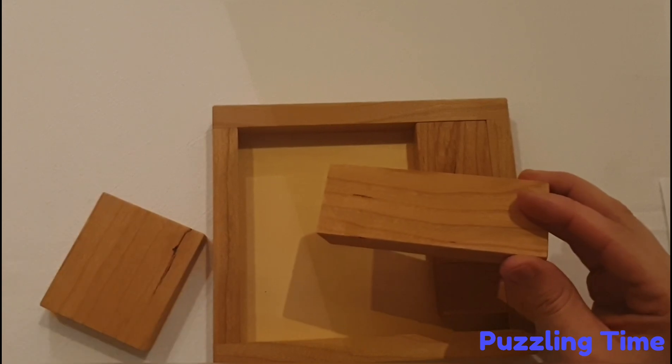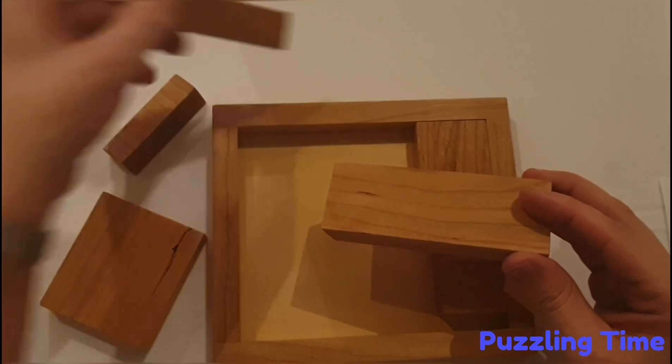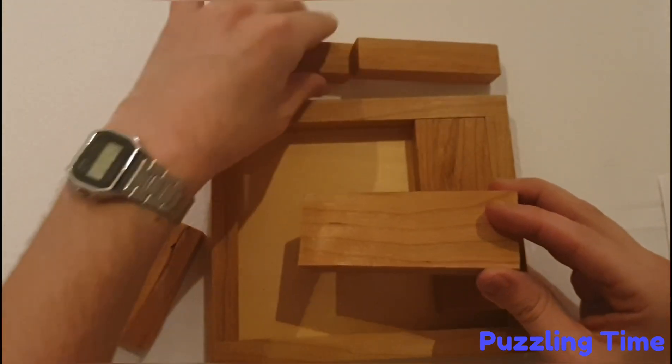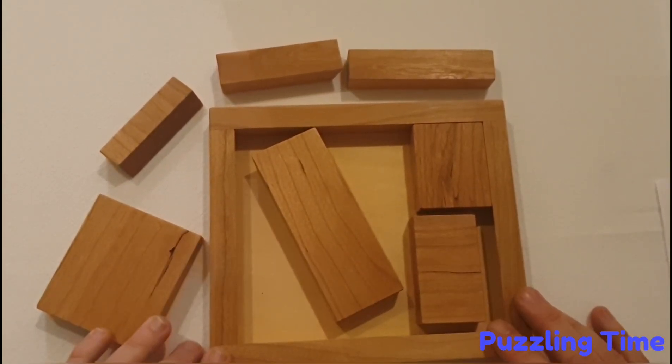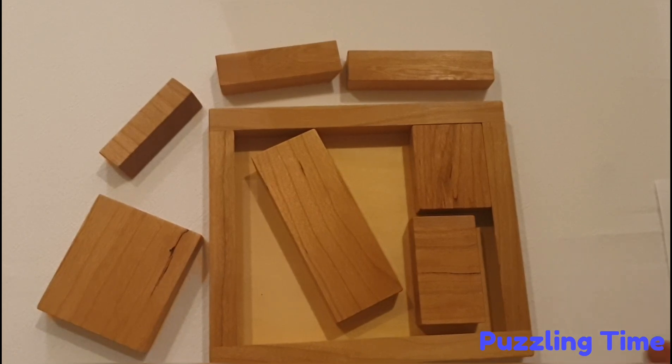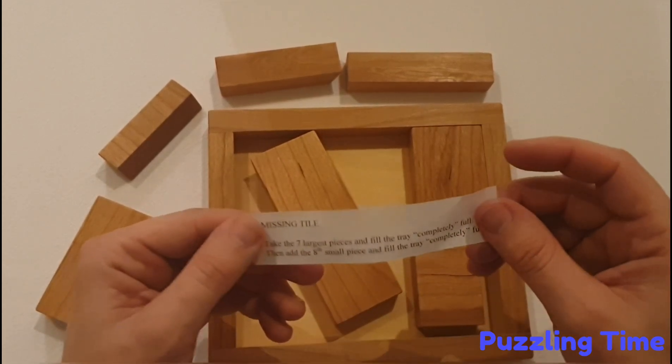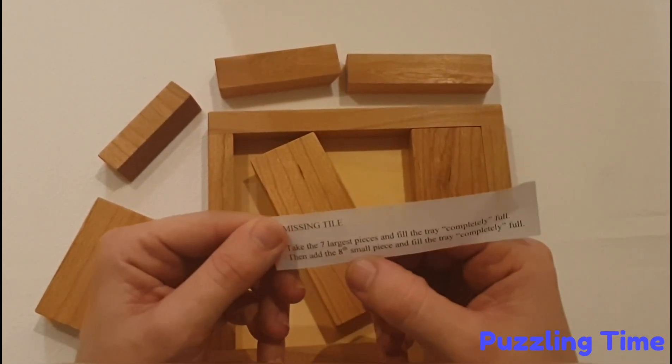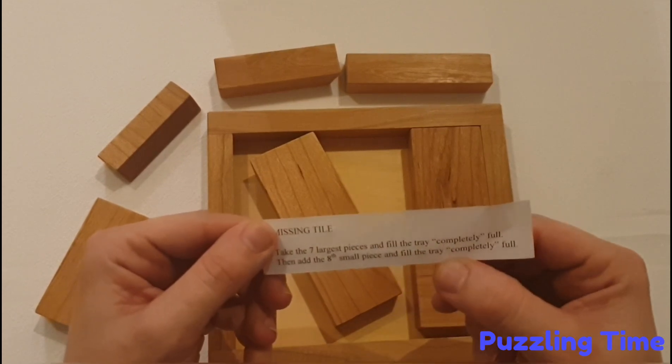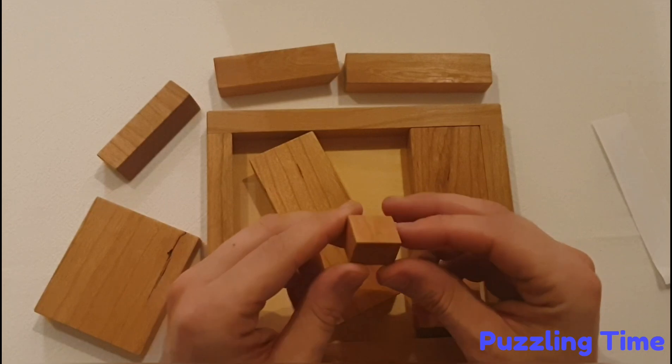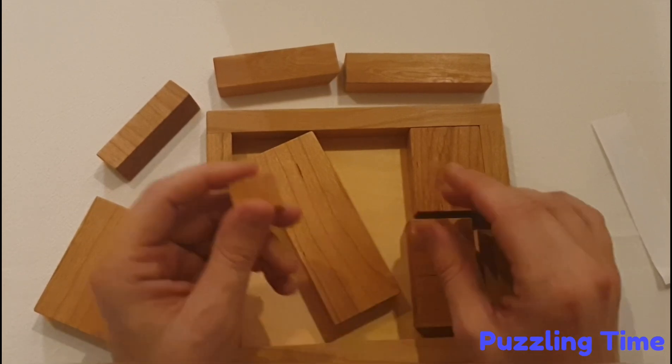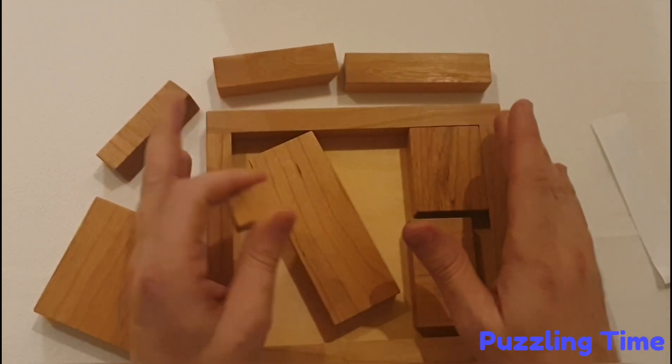So there's an extra dynamic to solving this puzzle. It's not just as simple as taking these seven large pieces and putting them into the tray. There's actually a lot more to it. Once you've completed that challenge, challenge number two is then add the eighth small piece and fill the tray completely full, and that small piece there is the missing tile.